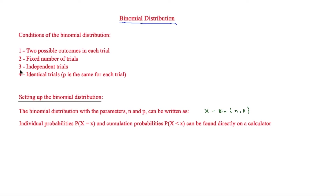The first condition is that there are two possible outcomes in each trial. This means that you're either going to have a success or you're going to have a failure — those are the two possible outcomes.